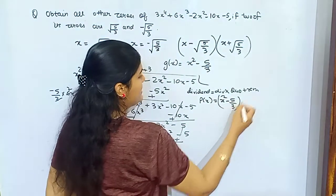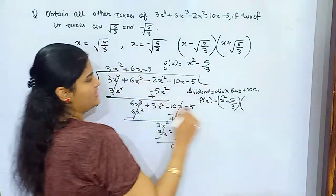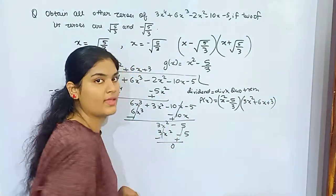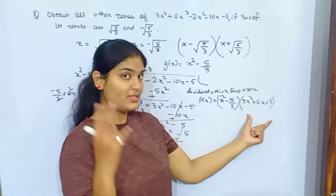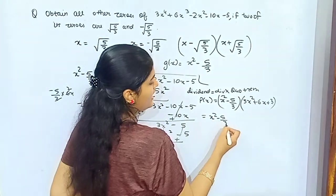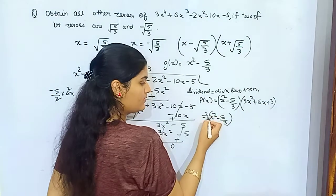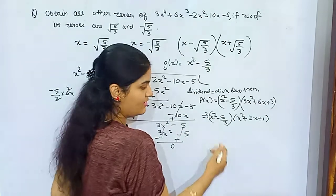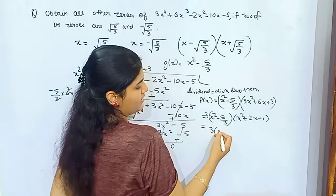Now the main point is this quotient form: 3x² + 6x + 3. Split this. You will get two more forms. You can take 3 common. What you have got: x² + 2x + 1. You know how to solve it, right? Yes, you do.